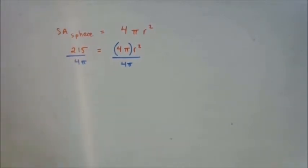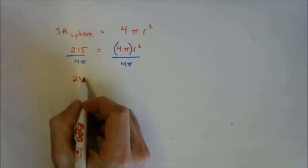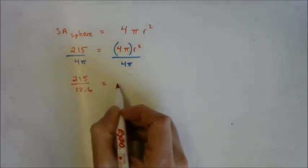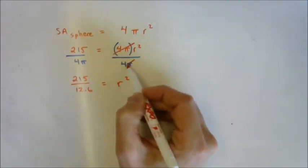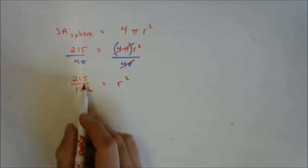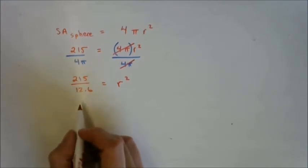On this side we're just left with r² because these guys cancel out. And now you can do 215 divided by 12.6.